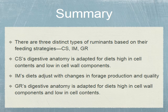In summary, there are three distinct types of ruminants based on feeding strategies: concentrate selectors, intermediate feeders, and grazers. The concentrate selector's digestive anatomy is adapted for diets high in cell contents and low in cell wall components. The intermediate types' diets adjust with changes in forage production and quality. Lastly, the grazer's digestive anatomy is adapted for diets high in cell wall components and low in cell contents.